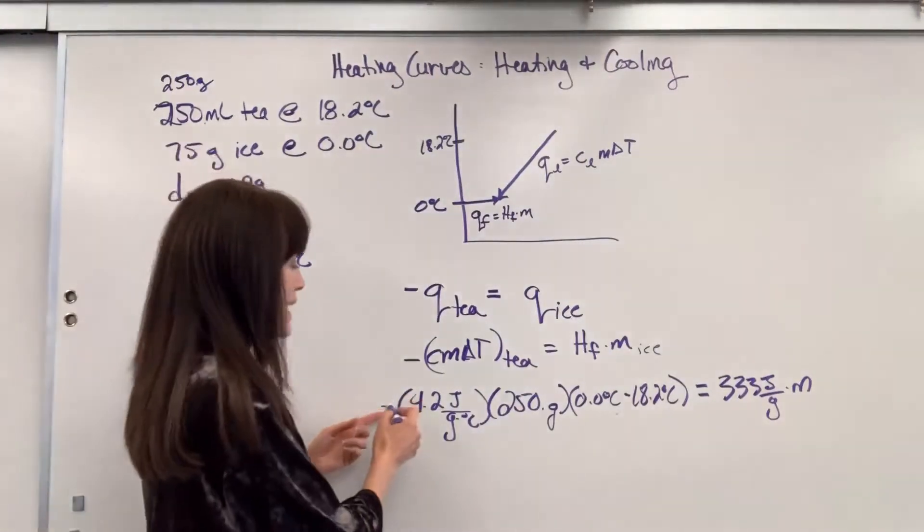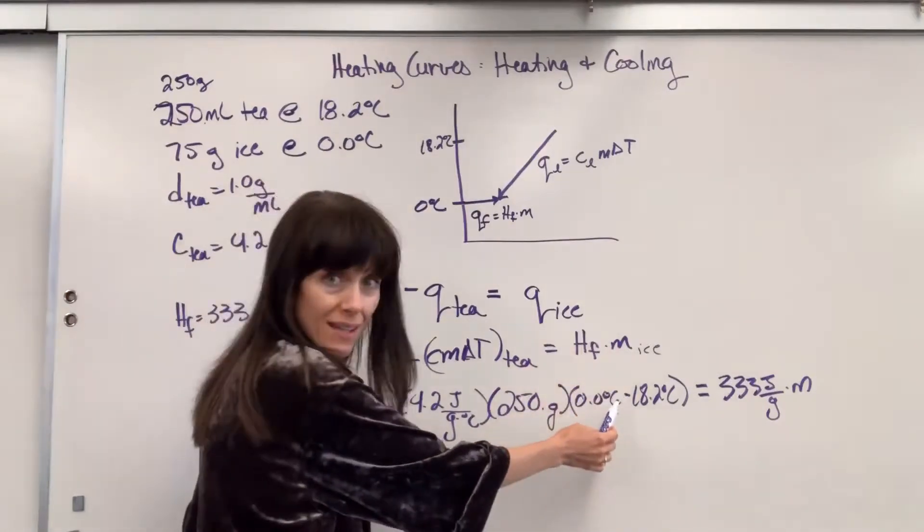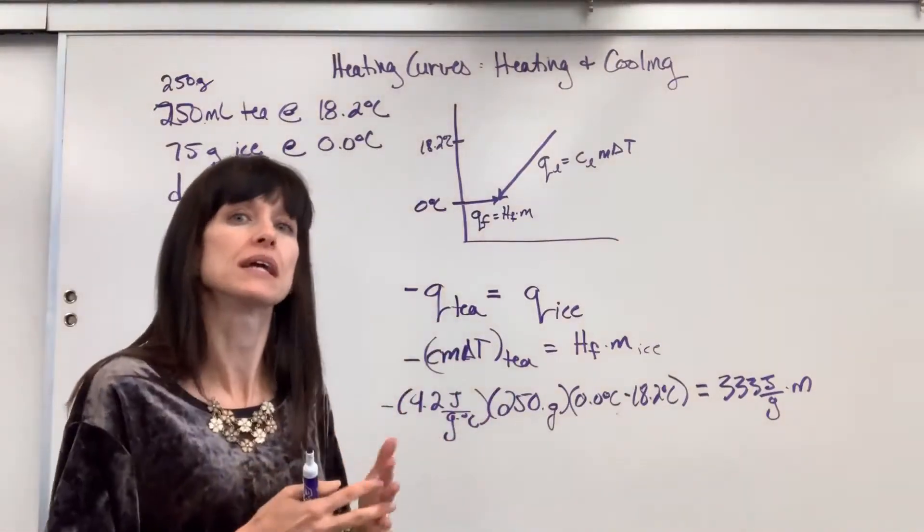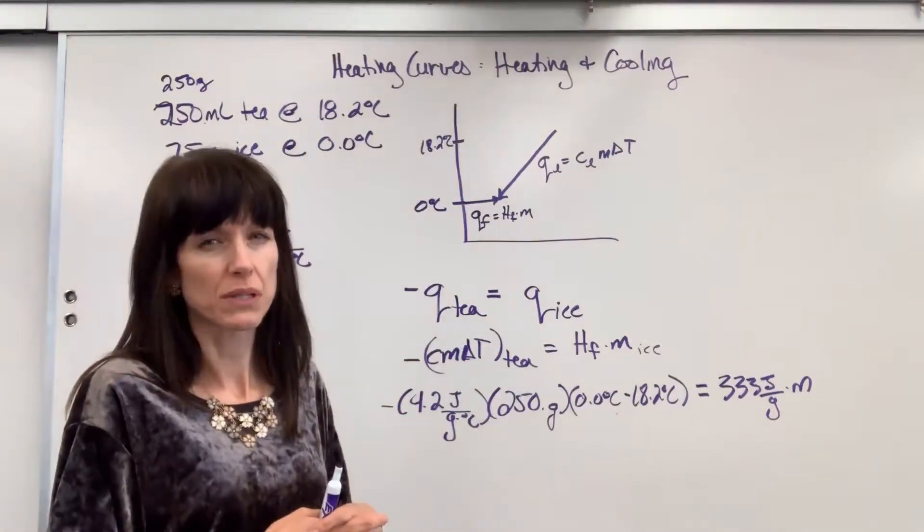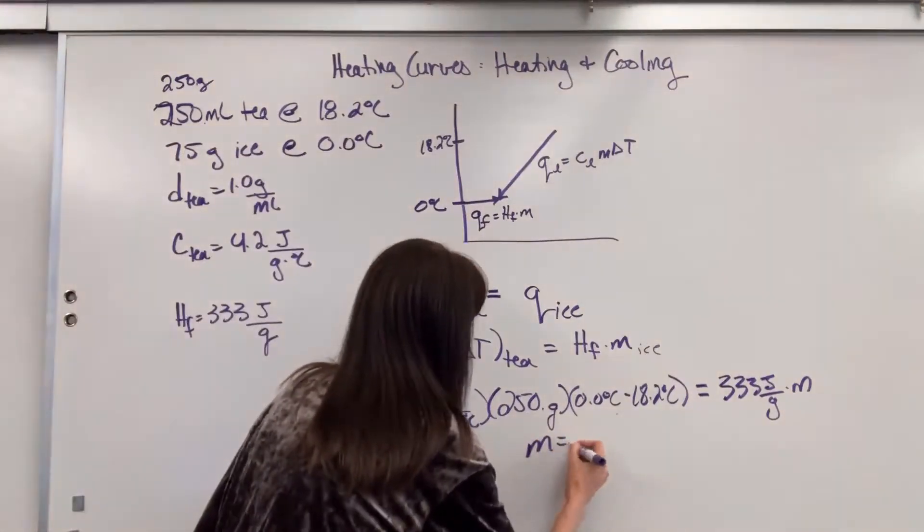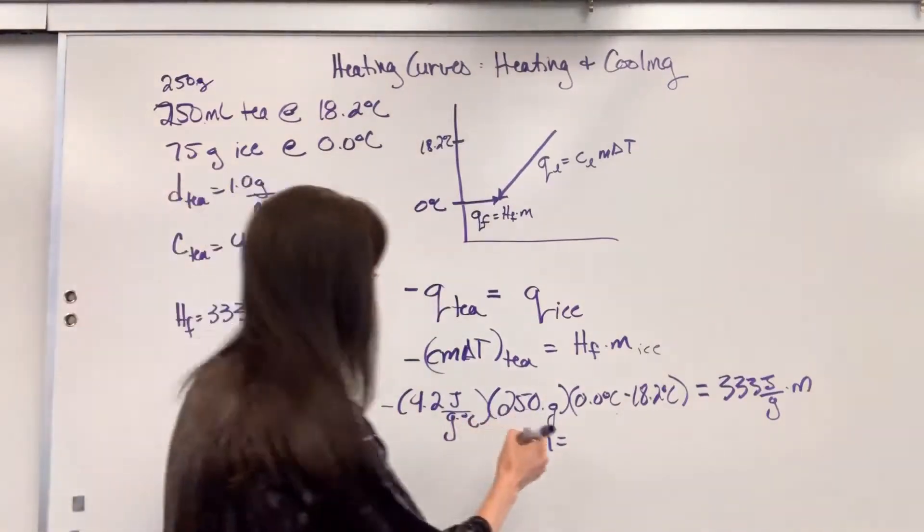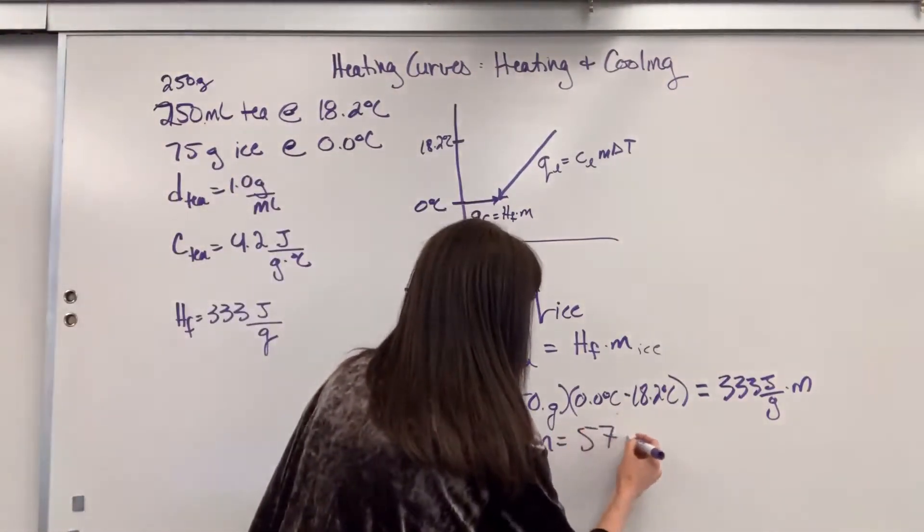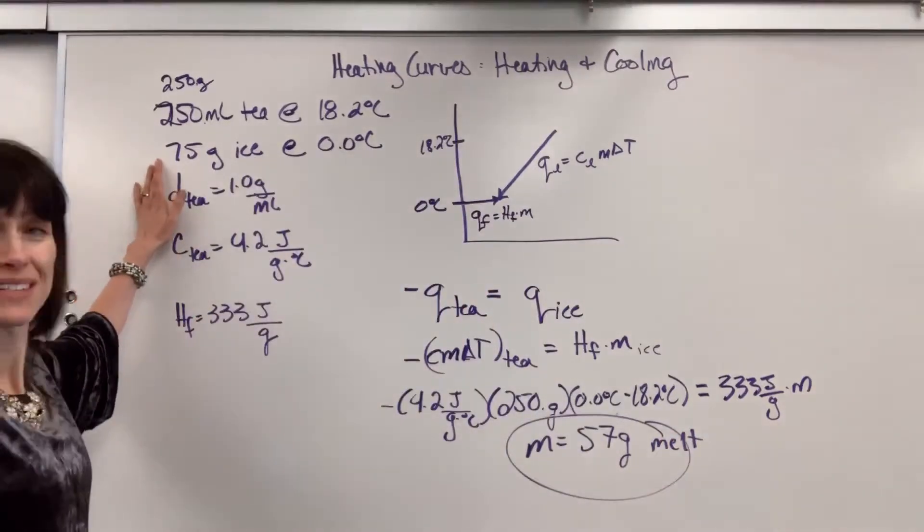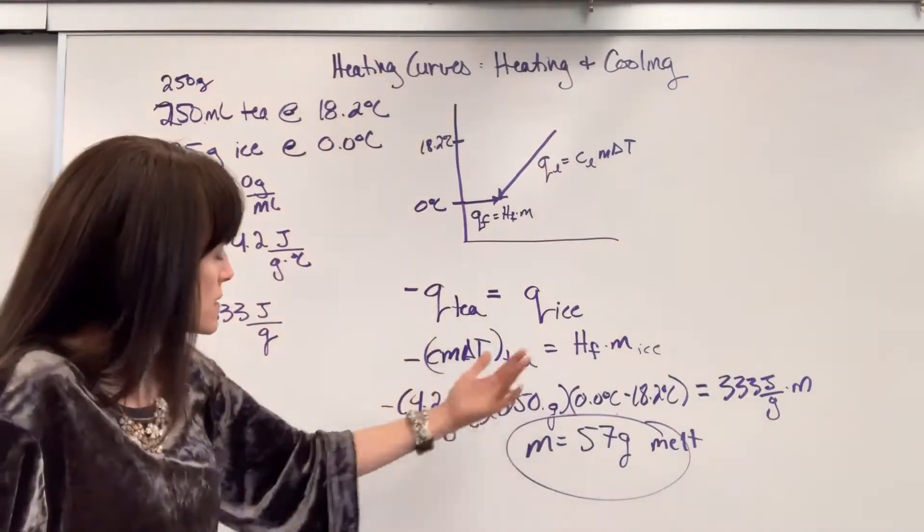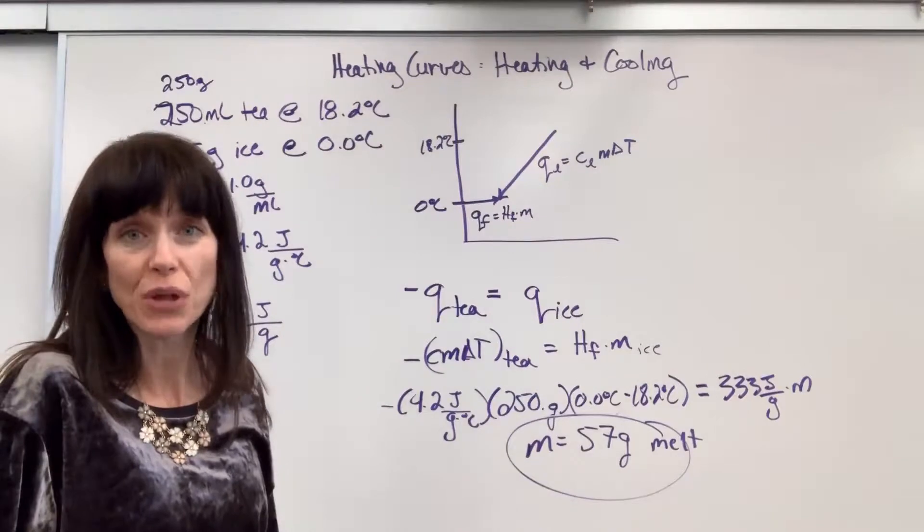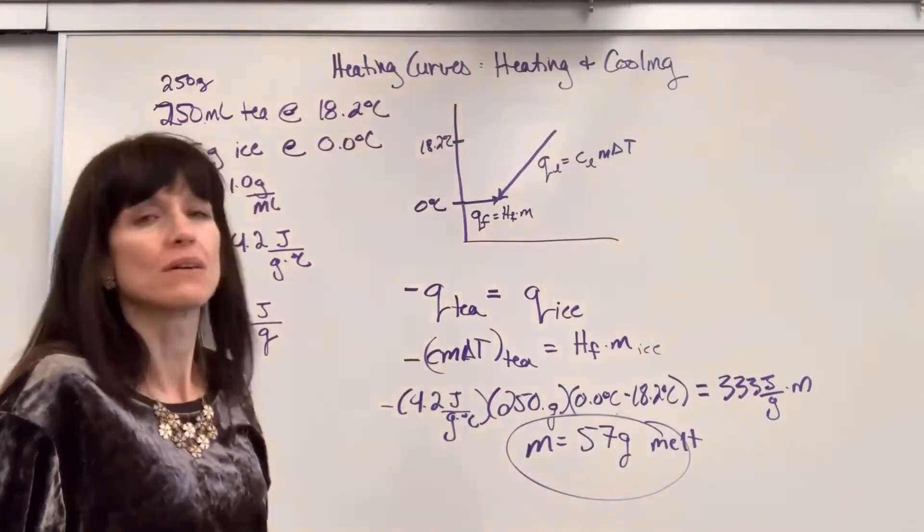So we plug everything in. Notice the negative is going to cancel that negative. So you'll end up with a positive value. So on this, when we have heating and cooling, even though I'm writing a heating curve, go ahead and be really careful with your units. We end up with M, I believe it was 57 grams. 57 grams of ice are going to melt. Now they gave us 75 grams. So that means that I would have 18 grams of ice floating, and I'd have 57 grams that would have melted.